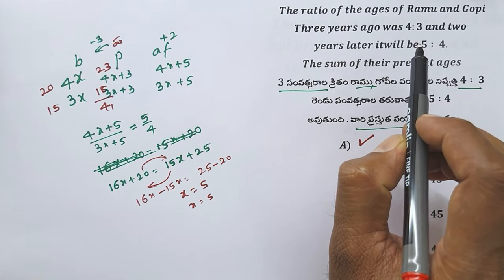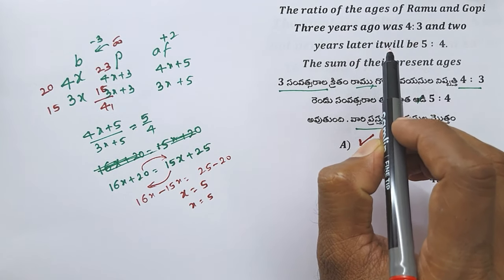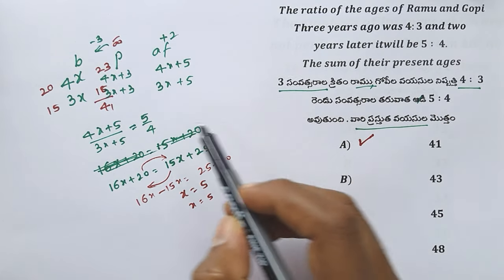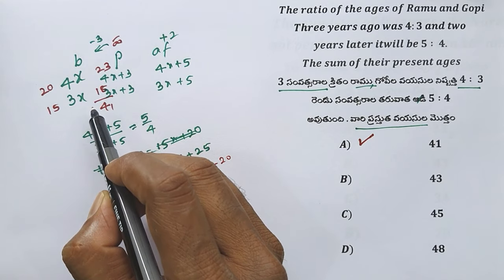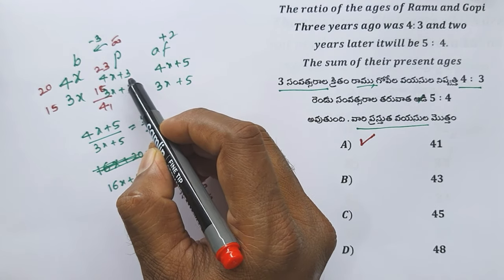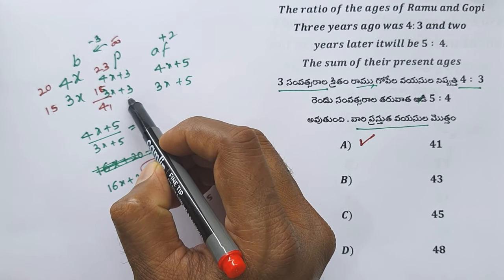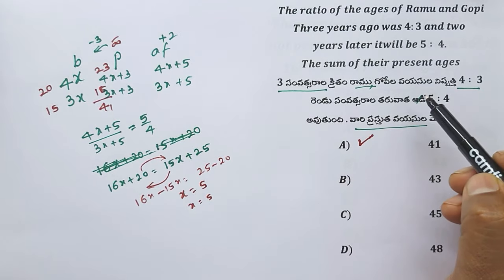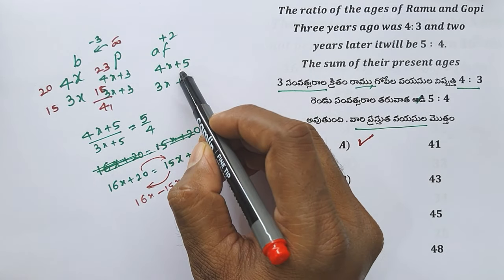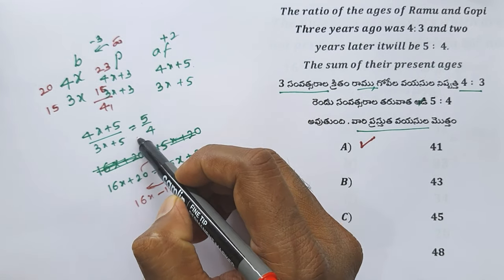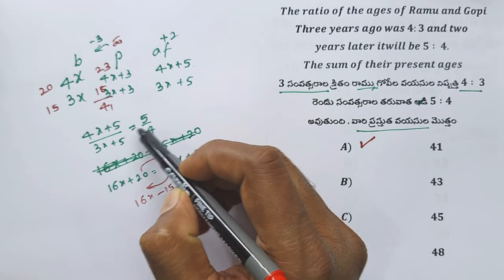Let's review. Present ages: three years before, the ratio was 4x to 3x. Three years ago: 4x, 3x. After two years, the ratio becomes 5 by 4.